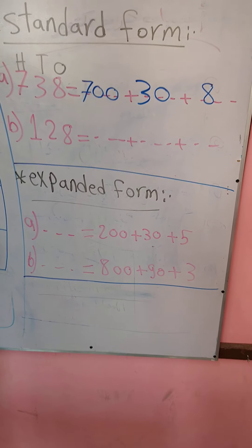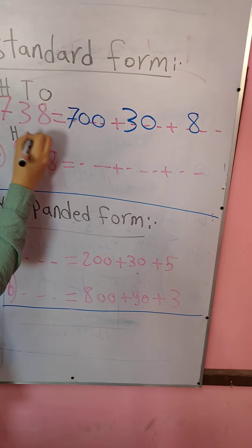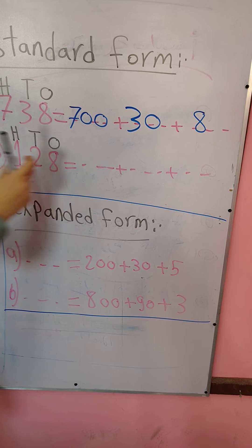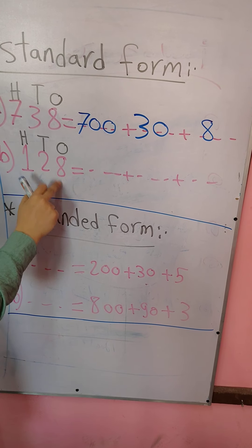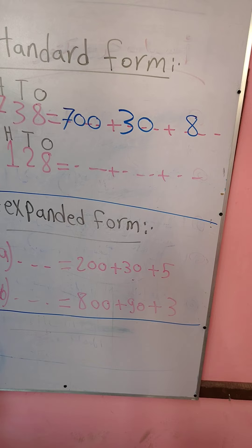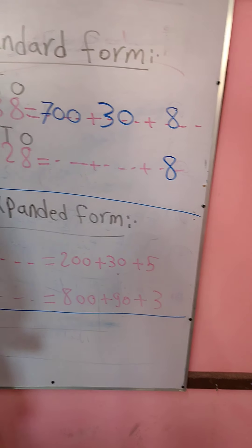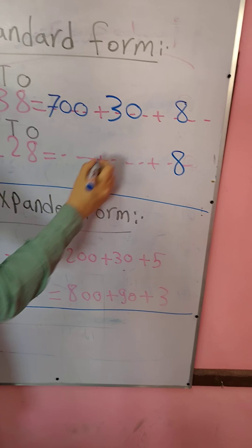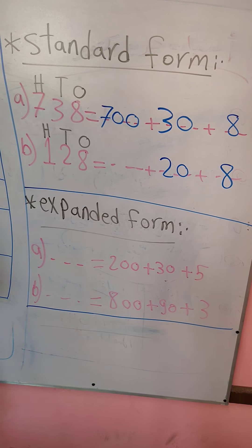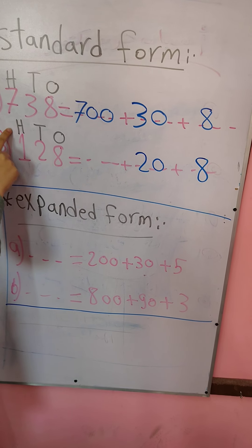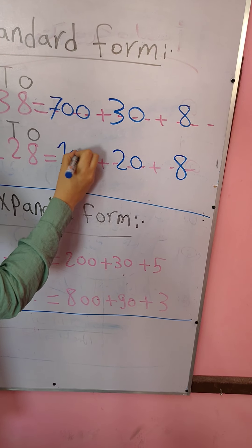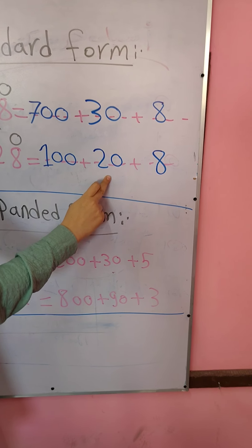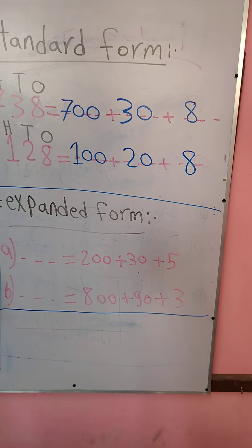The second example: I'll write H, T, O. This number is 128. Number 8 is in the ones place, so I write 8 without any zero. Number 2 is in the tens place, so I write 2 with one zero — value is 20. Number 1 is in the hundreds place, so I write 1 with two zeros — value is 100. So: 100 plus 20 plus 8. This is called standard form.